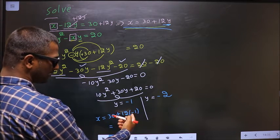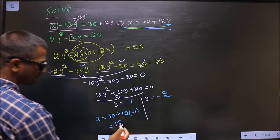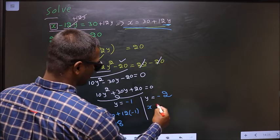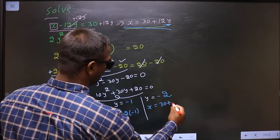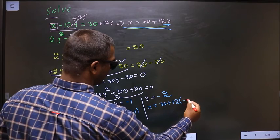So now plus 12 into minus 1 is minus 12. 30 minus 12 is 18. Now replace y to be minus 2.